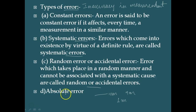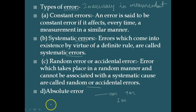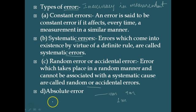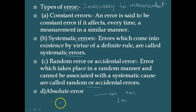Another type of error is called absolute error. The magnitude of the difference between an individual measurement and the true value of the quantity is called absolute error. Here we compare the measured value with the true value, and the result we get is the absolute error.